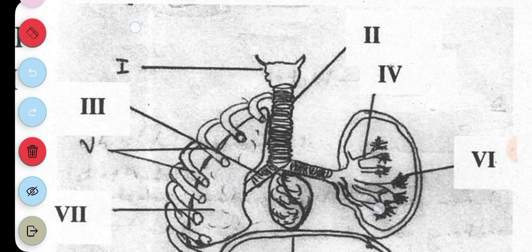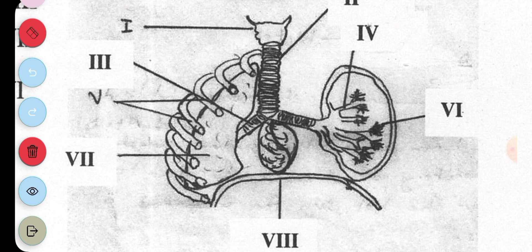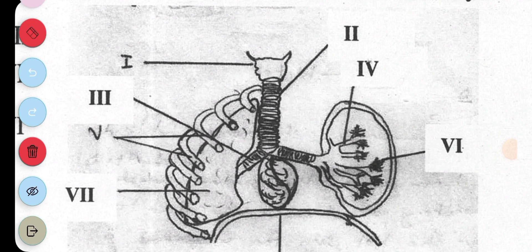For the respiratory system, part I is the larynx, part II is the trachea, part III is the bronchus, part IV is the bronchiole. Part V represents two structures—the ribs—and part VI is the alveoli where gaseous exchange actually takes place.